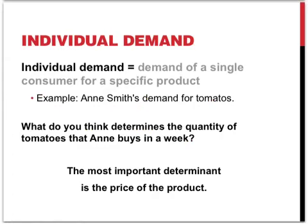We will examine the individual's demand and then the market demand. Individual demand refers to the demand of a single consumer for a specific product. In the textbook example, it's about Ann Smith's demand for tomatoes. So, what do you think determines the quantity of tomatoes that Ann buys in a week? The most important determinant is the price of the product.